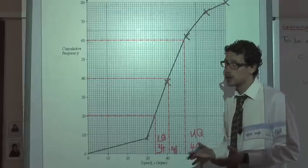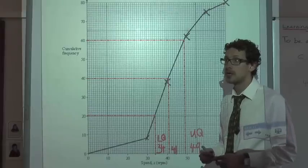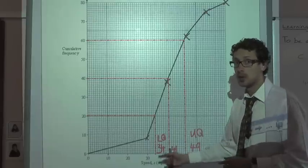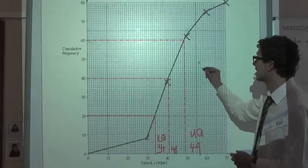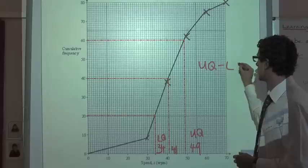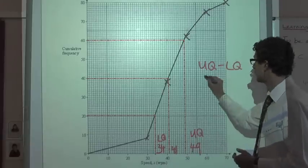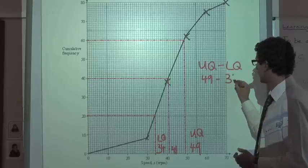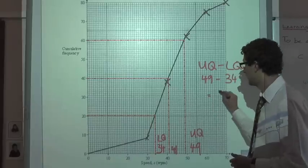We're only asked to find the interquartile range, so I need to find the difference between the upper quartile and the lower quartile. The calculation is: upper quartile take away lower quartile, which in this example is 49 take away 34, giving an interquartile range of 15.